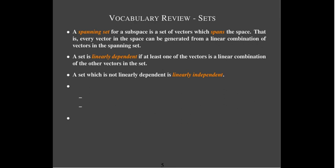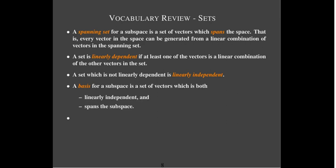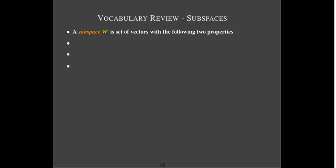A special set is a basis for a subspace. A basis for a subspace needs to be linearly independent and it has to span the subspace. The dimension of a subspace is the number of vectors in any basis. Every basis has the same number of vectors, and that number is what we call the dimension of that subspace.